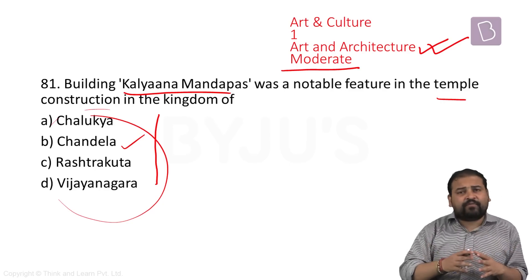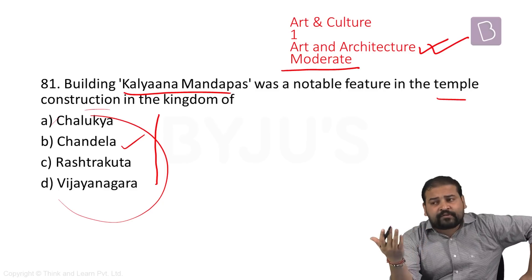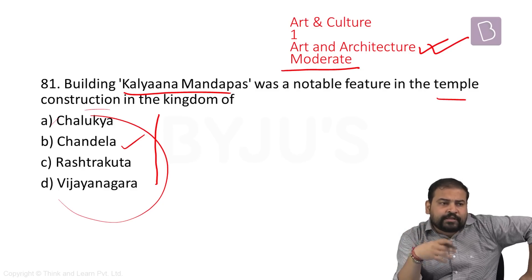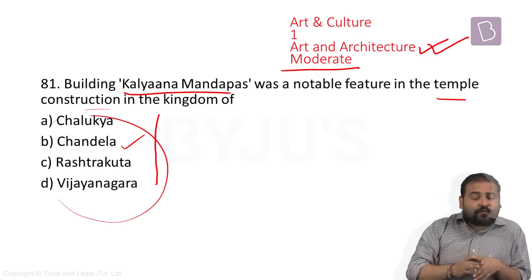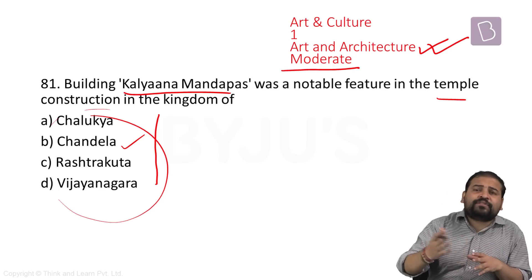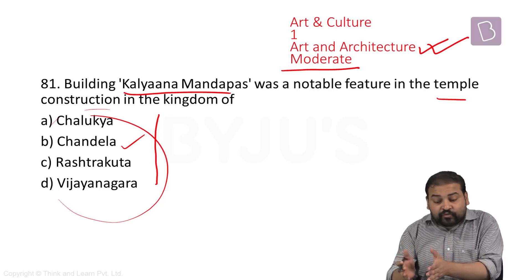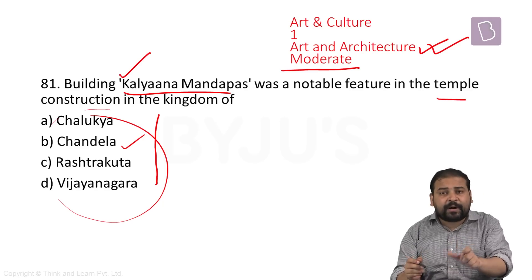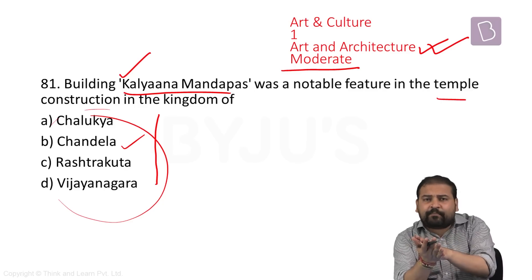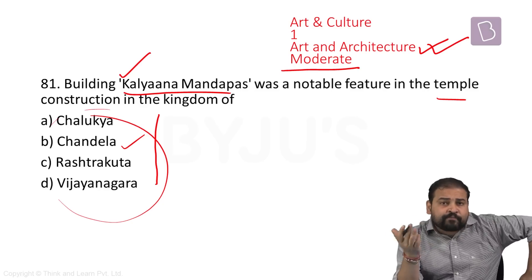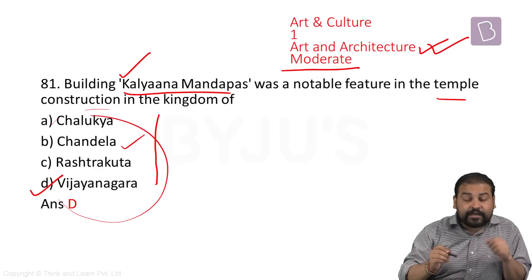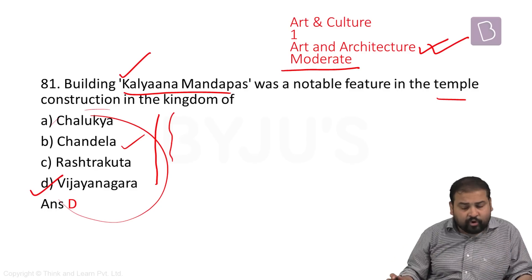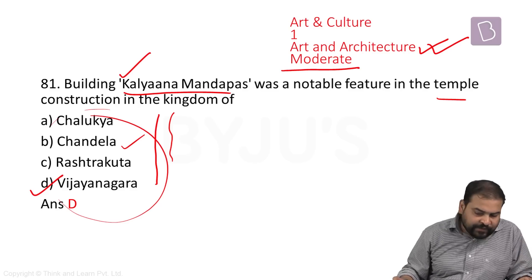Chandelas are North Indian kingdoms whereas the others are usually southern ones, so Chandelas were the worst option. The answer to this is Vijayanagar. Good examples are the temples of Hampi and the Vithal temple, where the Kalyanamandapa — marriage ceremony halls — were constructed by Vijayanagar rulers like Devaraya II and later Krishnadev Rai, the greatest ruler of the Vijayanagar dynasty. It's a moderate question: if you knew the answer, you'd get D easily; otherwise you'd be confused.